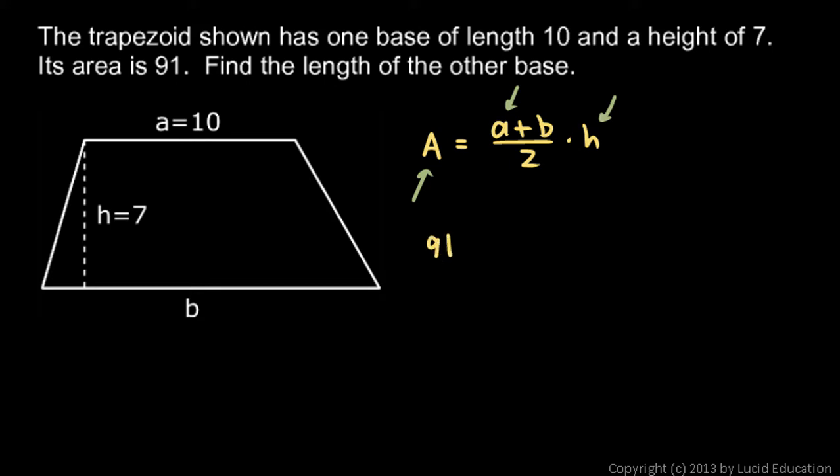We know the area is 91. That equals a plus b, and a is 10, that's 10 plus b over 2, times the height which is 7.